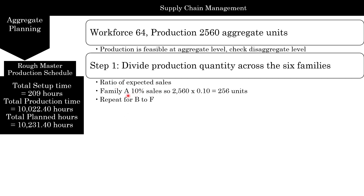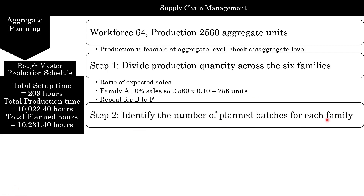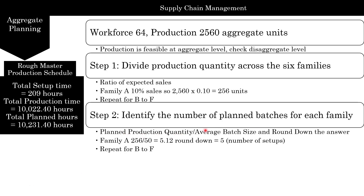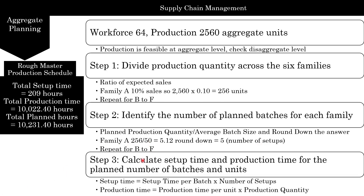Use the ratio of expected sales — so family A was 10% of sales, which is going to be about 256 units. The next step is to identify the number of planned batches for each family: planned production quantity divided by average batch size, then round down the answer. So family A was 256 and average batch size was 50, which comes to 5.12 — essentially allowing five setups, so five times you're going to produce batches of 50. Now we calculate the setup time and production time for the planned number of batches: setup time per batch multiplied by number of setups, and production time multiplied by production quantity. The total setup time is 209 hours, total production time is 10,022 hours, giving a total planned time of 10,231 hours.